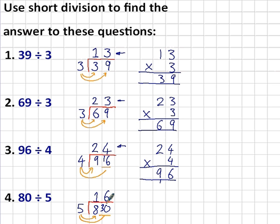5 into 30 goes 6 times. 5 times 6 is 30. So there's my answer. 16. 80 divided by 5 is 16.